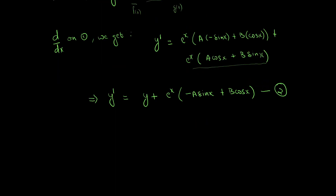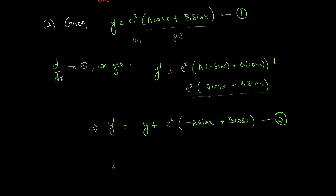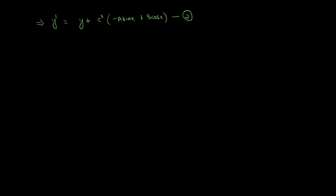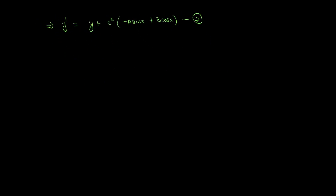We still have two arbitrary constants in equation 2, so we need to eliminate both. For that, we need to differentiate equation 2 with respect to x one more time.